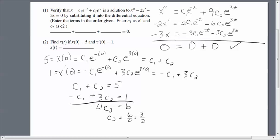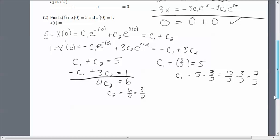And once I know that, I just plug in c₂ into this expression here. So c₁ = 5 - 3/2, which is 10/2 - 3/2, which is 7/2. So now that I have c₁ = 7/2 and c₂ = 3/2,